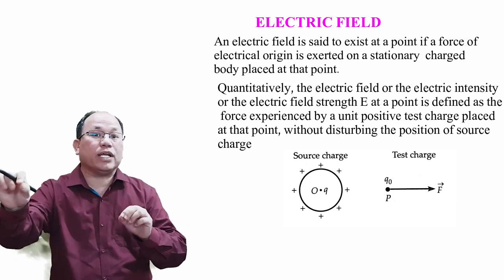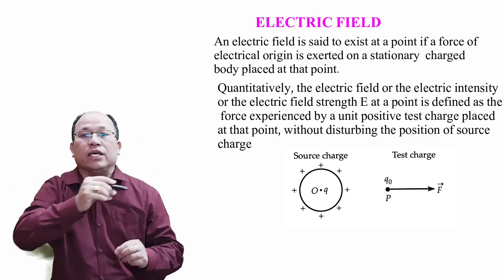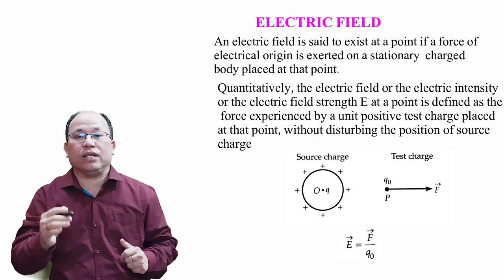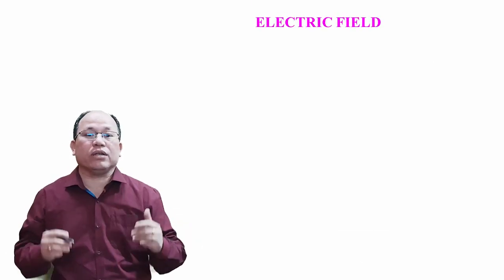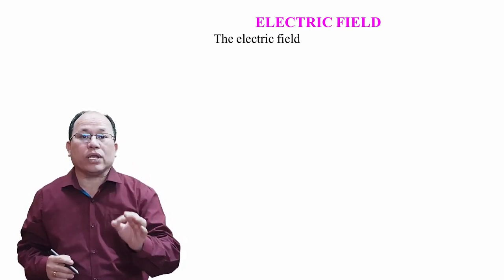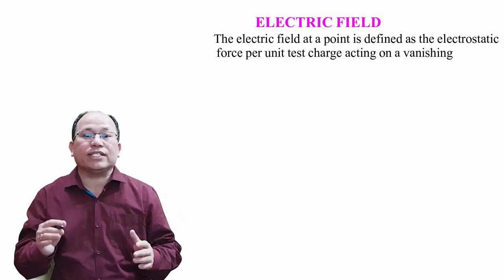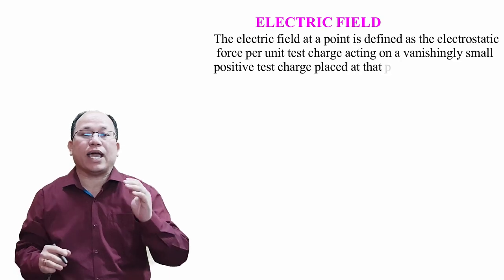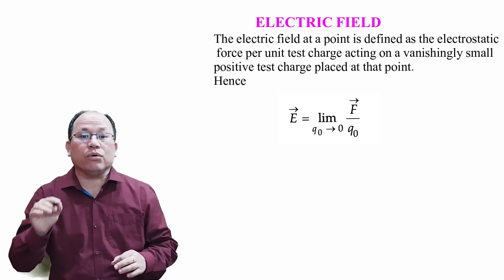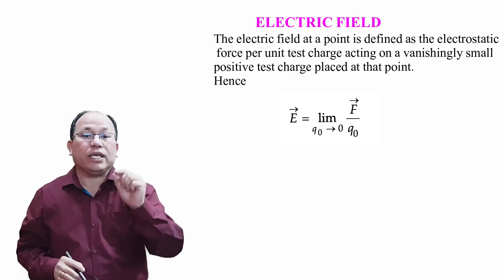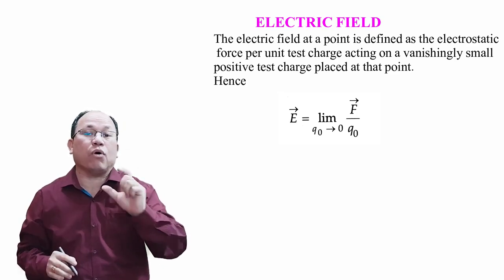The force experienced in a particular region — that particular region is called electric field, or simply electric field intensity. Another way we can define: the electric field at a point is defined as the electrostatic force per unit test charge acting on a very small positive test charge placed at that point. Hence we can write: E vector equal to limit of q₀ tends to zero, F vector upon q₀. Here E vector represents the electric field, and the limit of q₀ tends to zero is the important condition.